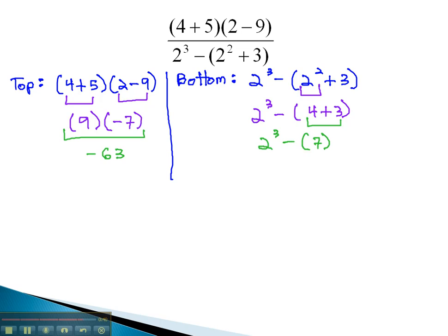Next, after the parentheses, we are asked to simplify exponents. 2 cubed is 8, minus 7. And finally, 8 minus 7 is 1.